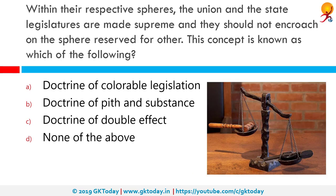Within their respective spheres, the union and state legislatures are made supreme and should not encroach on the sphere reserved for the other. This concept is known as the doctrine of pith and substance. Pith and substance means the true nature of law — the real subject matter is challenged and not its incidental effect on another field. The doctrine has been applied in India to provide a degree of flexibility in the otherwise rigid system of distribution of powers.